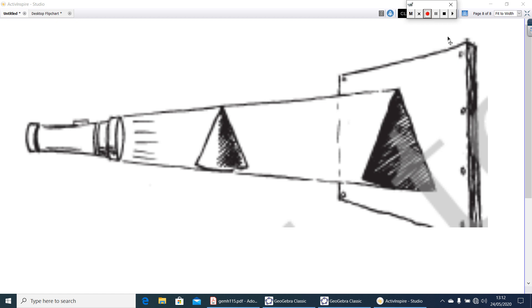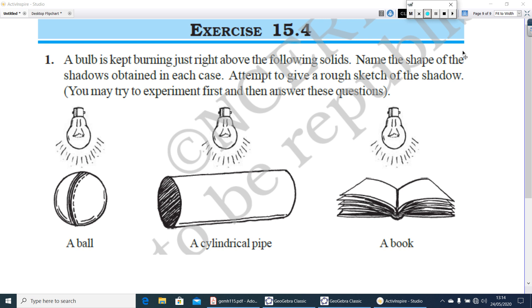Let's look at some examples, exercise 15.4. A bulb is burning just right above the following solids. Here is a ball, a cylindrical pipe, and then a notebook. Name the shape of the shadow obtained in each case. Attempt to give a rough sketch of the shadow. You write the name of the shadow. Here you will get a circle and draw a circle. Similarly, find out what will be the shadow of a cylindrical pipe when the bulb is kept on the top of that pipe, just above the pipe, and a notebook. Do it.